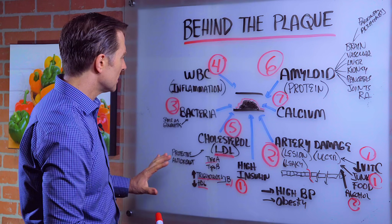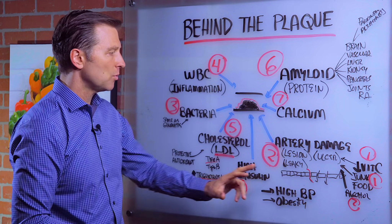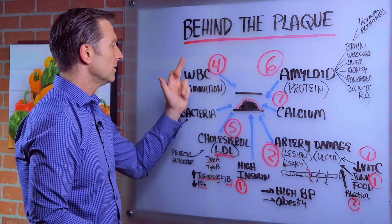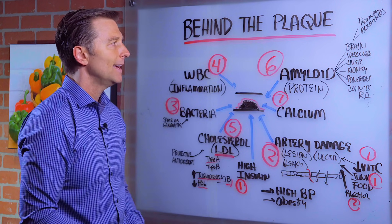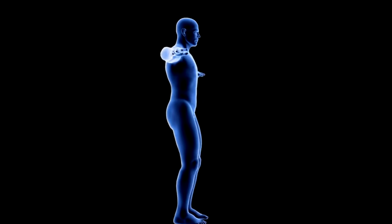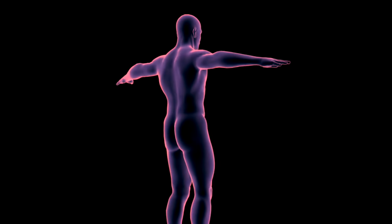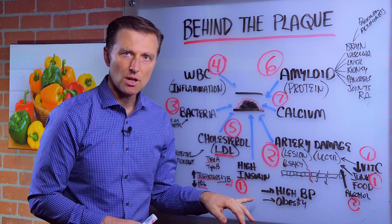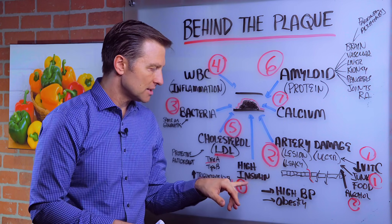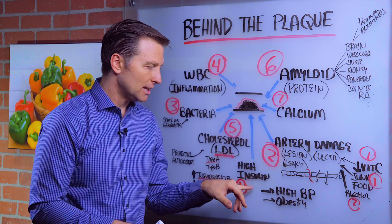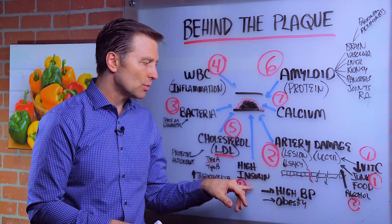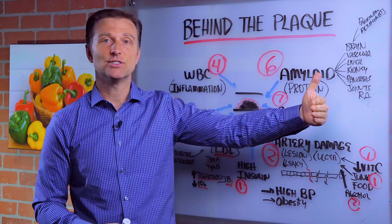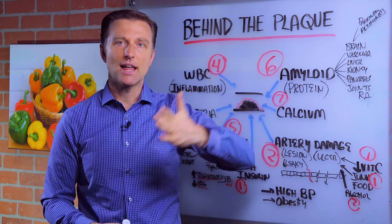I just wanted to show you the sequence of events — steps one through seven. That's really the order of things that occur, and it's happening all over your body. I'll put a link below for what you need to do about the key culprit here, because this is a big one. It actually causes high blood pressure and obesity. But obesity is the last thing to occur, not the first.